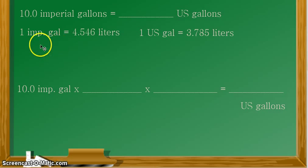And there we have written our equivalent statements needed for this conversion. One imperial gallon is equal to 4.546 liters, while one US gallon is equal to 3.785 liters.